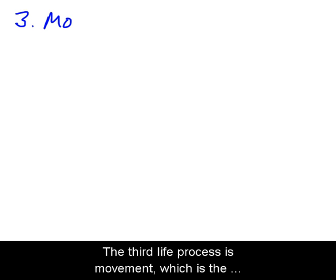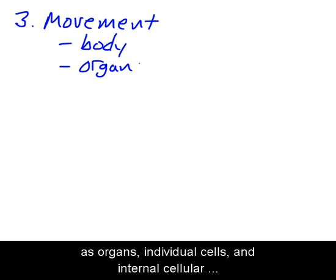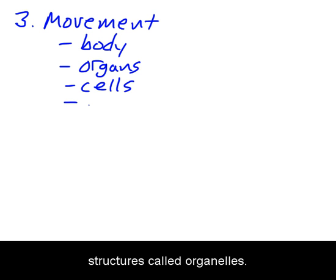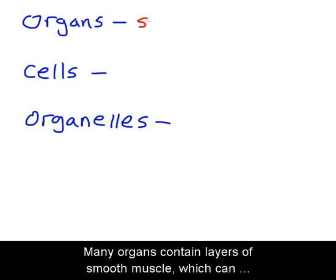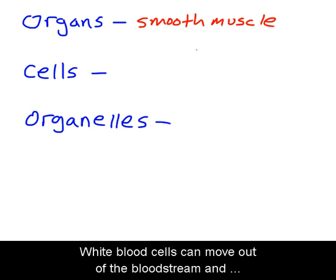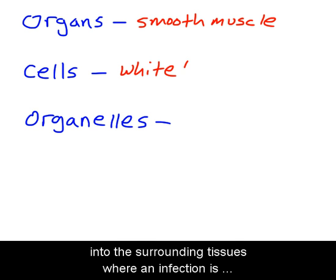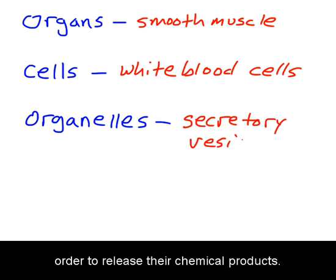The third life process is movement, which is the motion of the entire body or any of its components, such as organs, individual cells, and internal cellular structures called organelles. Many organs contain layers of smooth muscle, which can contract to propel substances through the organ. White blood cells can move out of the bloodstream and into the surrounding tissues where an infection is occurring. Inside the cell, secretory vesicles can move to the cell's plasma membrane in order to release their chemical products.